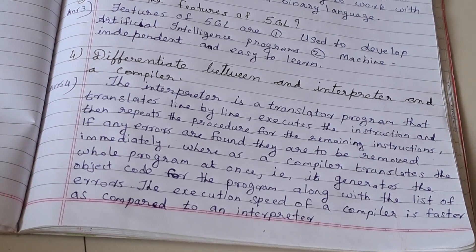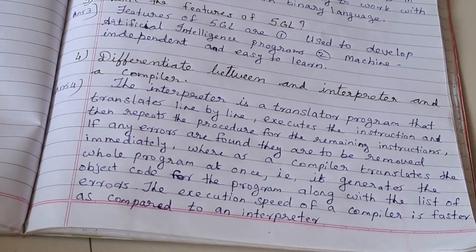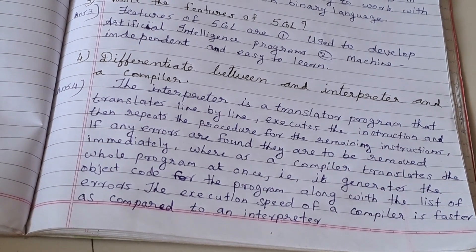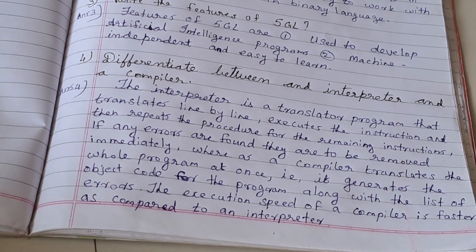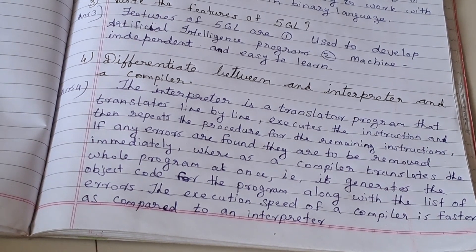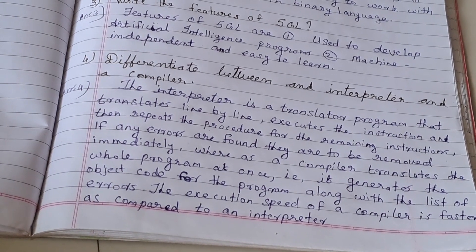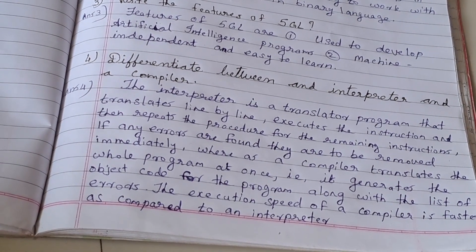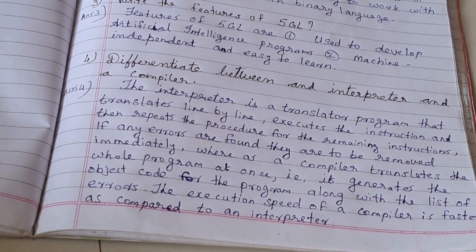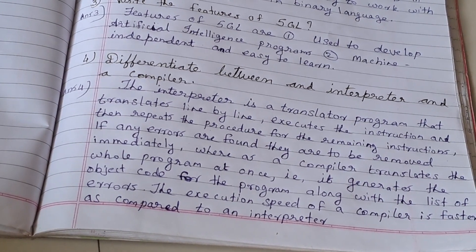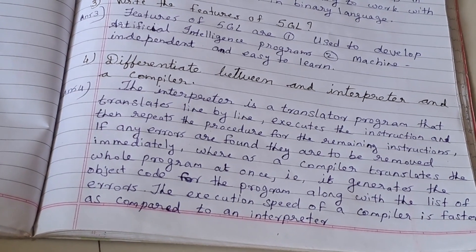Fourth question: Differentiate between interpreter and a compiler. Answer: The interpreter is a translator program that translates line by line, executes the instruction, and then repeats the procedure for the remaining instructions. If any errors are found, they are to be removed immediately. Whereas a compiler translates the whole program at once — it generates the object code for the program along with the list of errors.